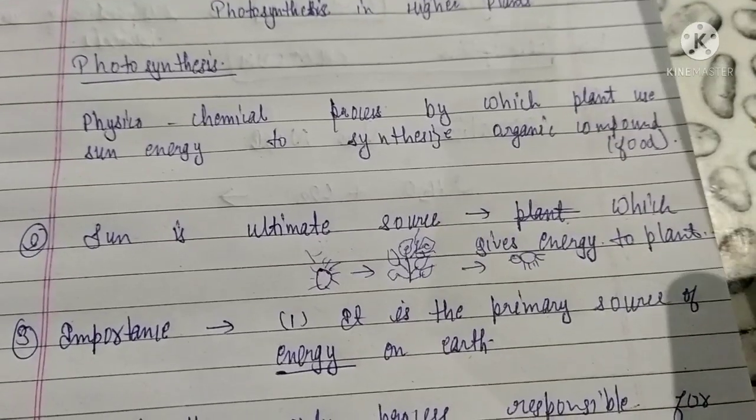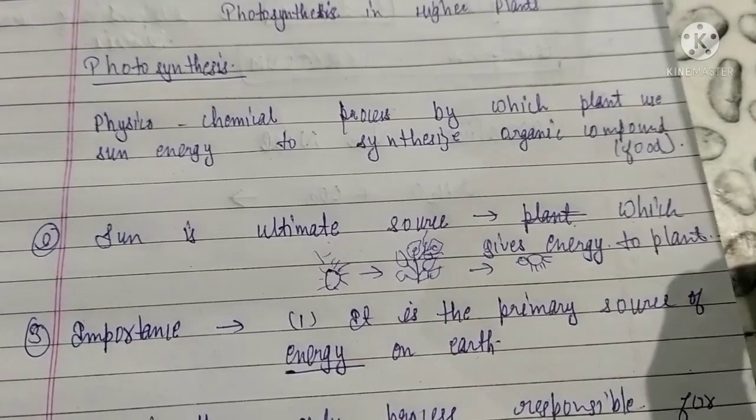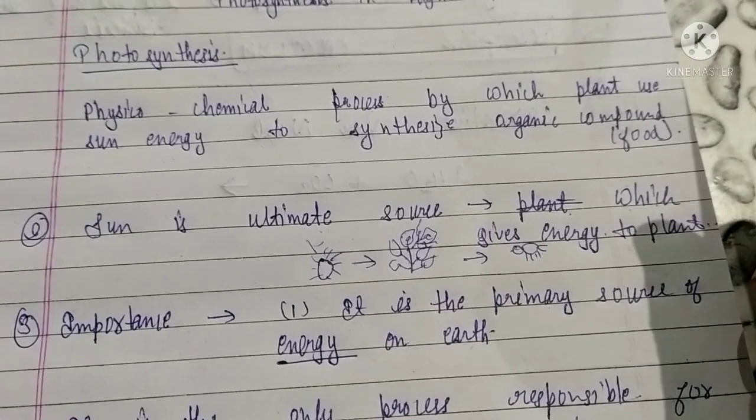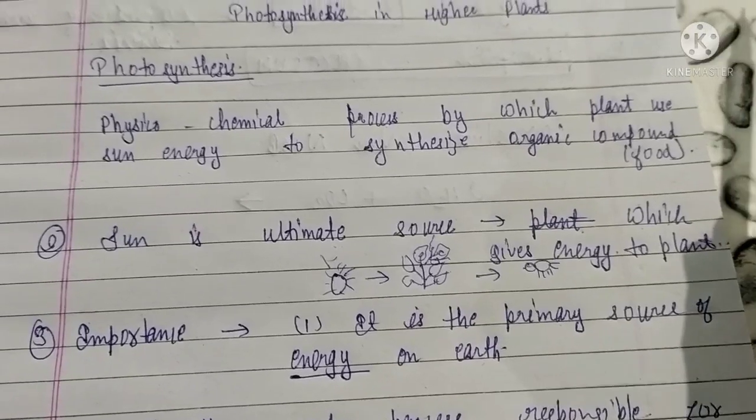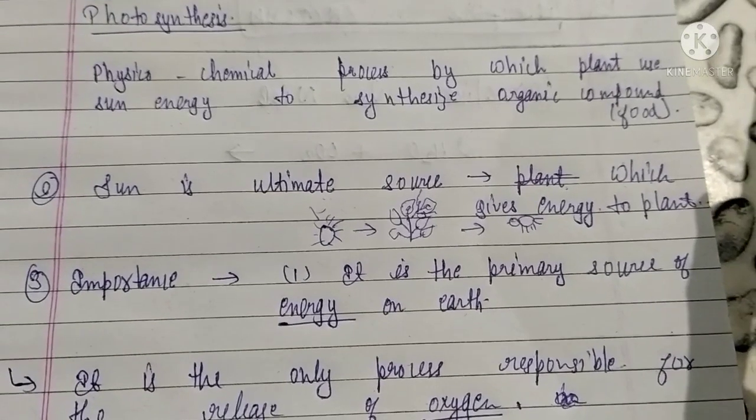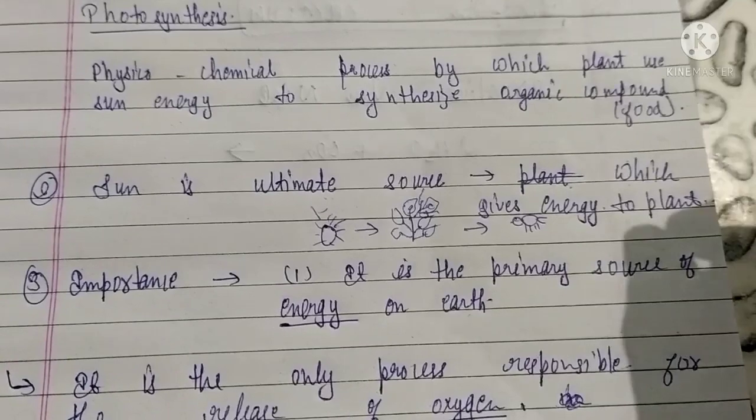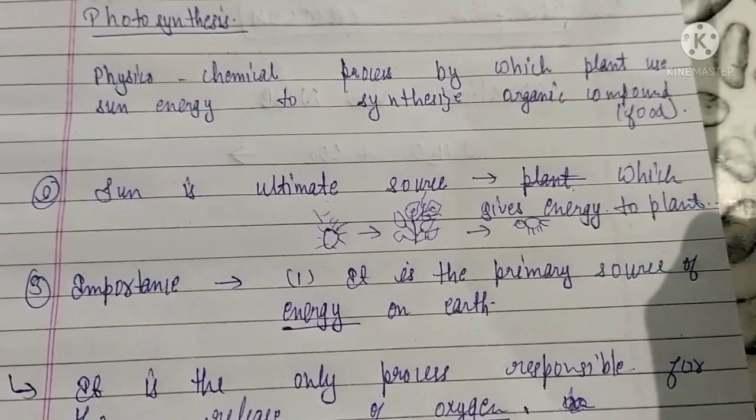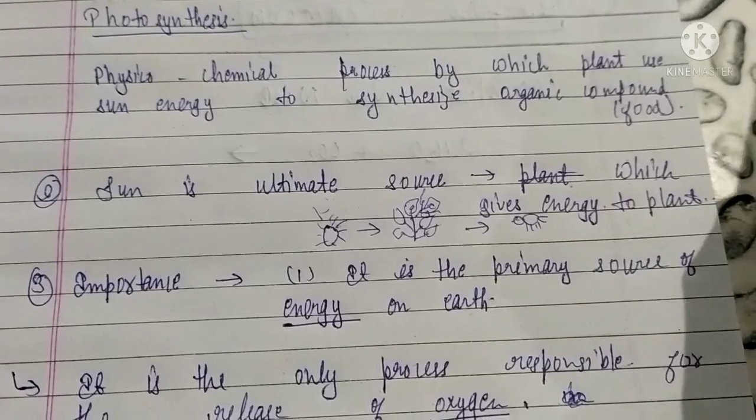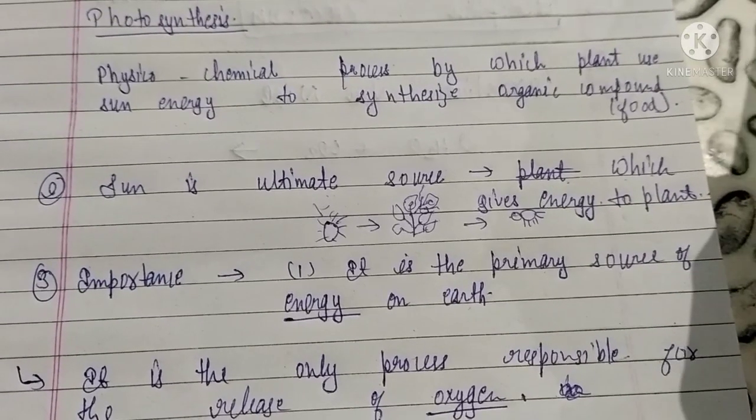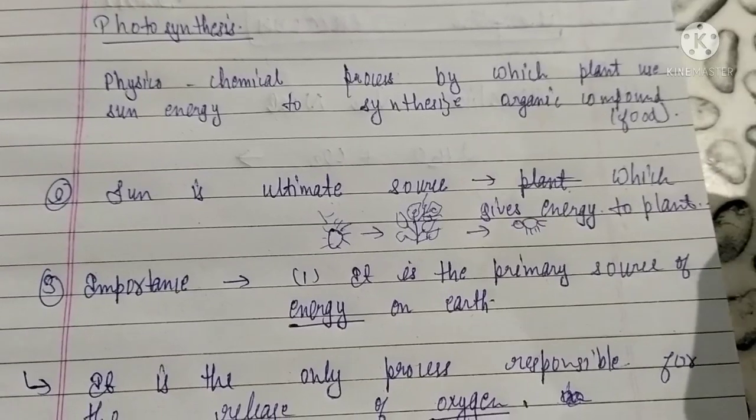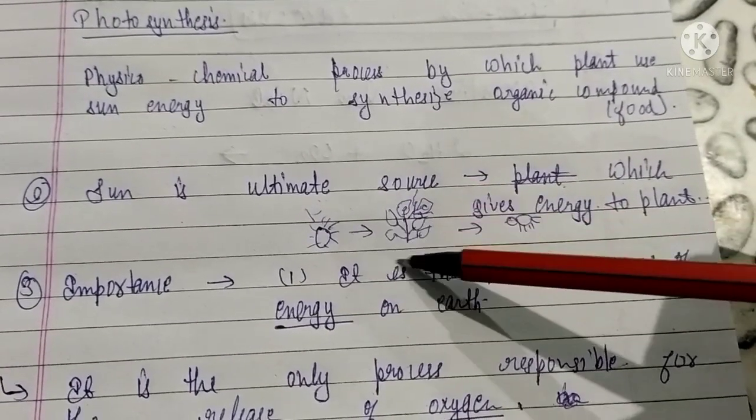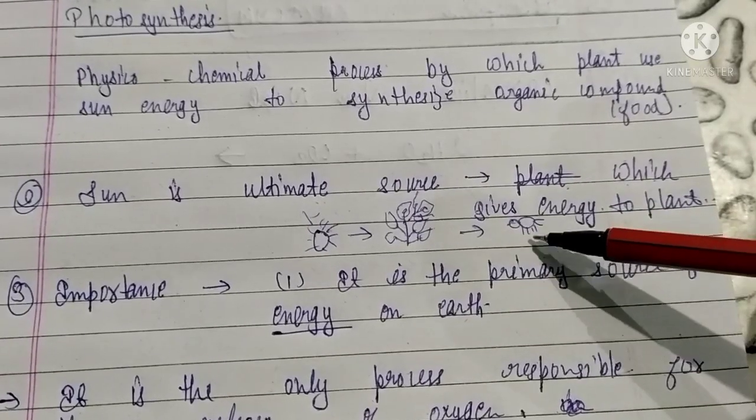Plants obtain energy through photosynthesis, and then these plants are eaten by animals, so animals also get their energy from plants.